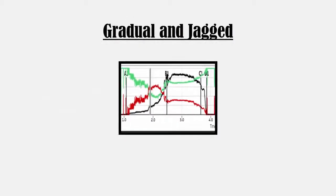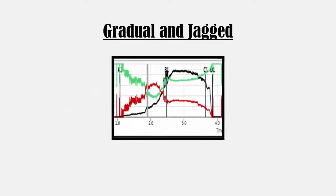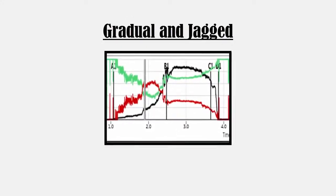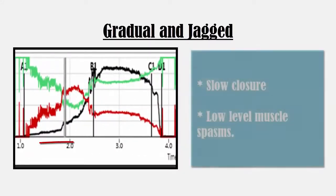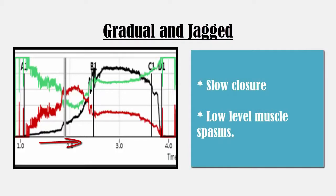In the next example, the gradually rising forces indicate a slow closure, while the jaggedness suggests that the patient is experiencing low-level muscle spasms.